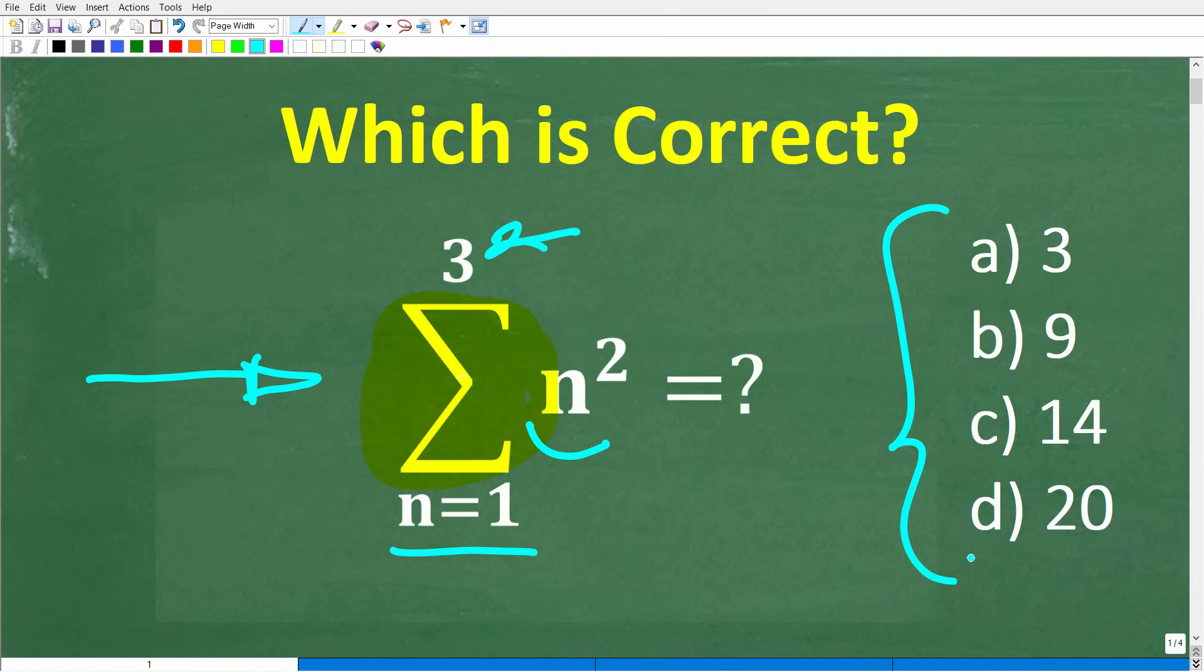Well the correct answer is one of these answers right here. So let's go ahead and take a look at our options. So a is 3, b is 9, c is 14, and d is 20.